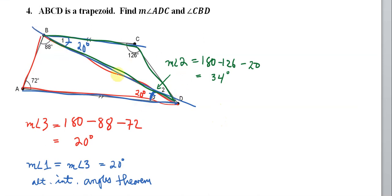We're basically chasing angles here. The measure of ADC, A to D to C, is the sum of angle 3 and angle 2, which is going to be 54 degrees. That's 34 and 20, that's 54. And then the measure of CBD is equal to the measure of angle 1, which is 20 degrees.